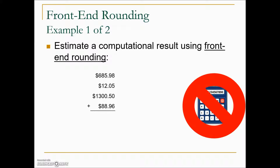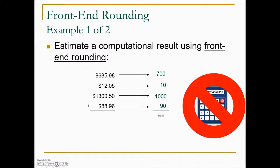Here's an example of where front-end rounding is helpful: in the event you don't have a calculator or smartphone and you just want a quick estimate. For example, these bills are coming in — do you have enough cash in your checking account to cover them? Using front-end rounding: $685 becomes $700, $12.05 becomes $10, $1,300 stays $1,000, and $88.96 becomes $90. Adding these together gives an estimate of $1,800 for the total.